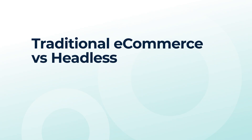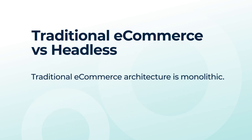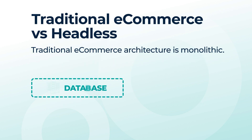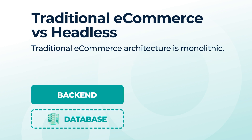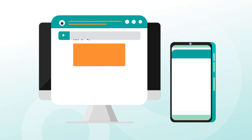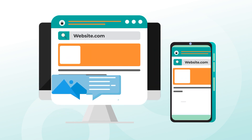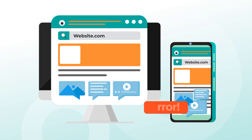Let's compare traditional eCommerce with Headless. Traditional eCommerce architecture is monolithic. You get package suites where the customer-facing layer – the Head – is mounted on a rigid structure: database, back-end, and front-end. A basic theme or predefined structure limits front-end developers and makes updating the user interface more complicated.